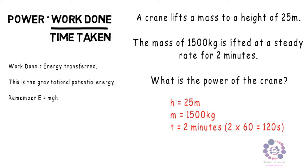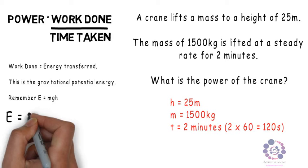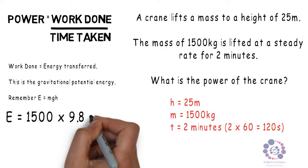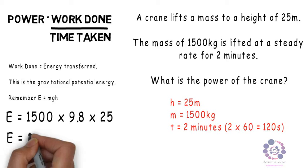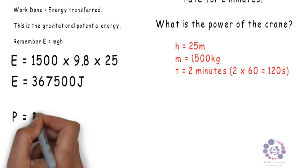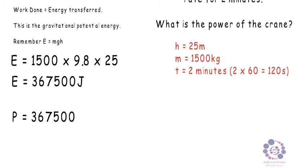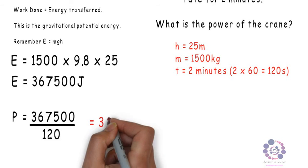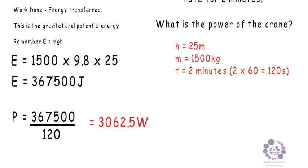So now we can input mass times by gravitational field strength which is 9.8 on earth times by the height. Therefore the gravitational potential energy in this case is 367500 joules. So the power equals this value divided by time which is 120 seconds to give you a value of 3062.5 watts.